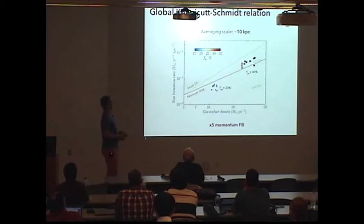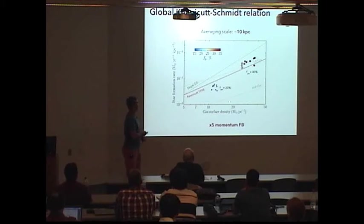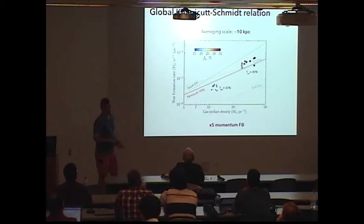We also tried our prescription in somewhat different regime. So this is the galaxy I showed you before. This is a global star formation rate, a global Kennicutt-Schmidt relation. And this is the galaxy with twice more gas. So this is the gas-rich galaxy. And with the boosted feedback, both galaxies lie close to observed relation for star-forming galaxies. So stay tuned for cosmological runs with this prescription.